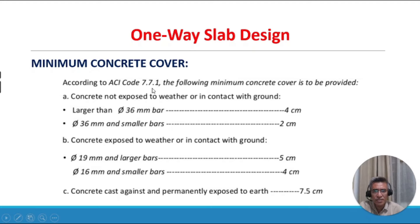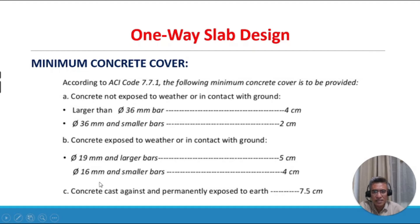For minimum concrete cover, per ACI Code 7.7.1: concrete not exposed to weather or in contact with the ground — bars larger than 36 mm diameter require 4 cm cover; 36 mm and smaller bars require 2 cm cover. Concrete exposed to weather or in contact with ground — 19 mm and larger bars require 5 cm; 16 mm and smaller bars require 4 cm. Concrete cast against and permanently exposed to earth requires 7.5 cm (75 mm) cover.